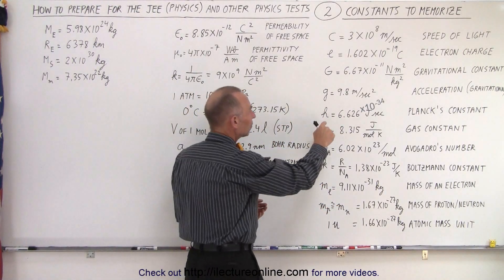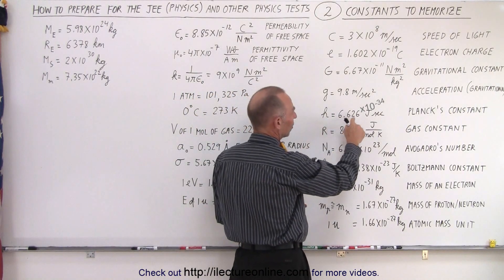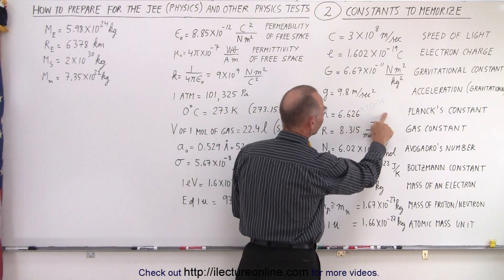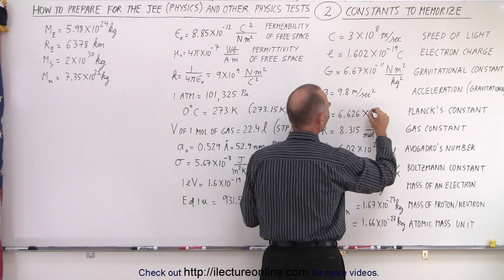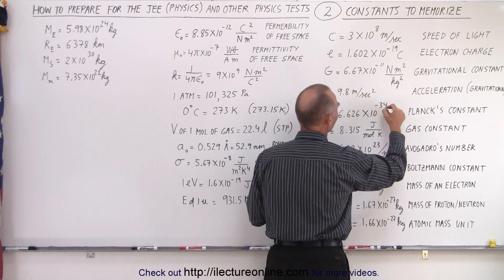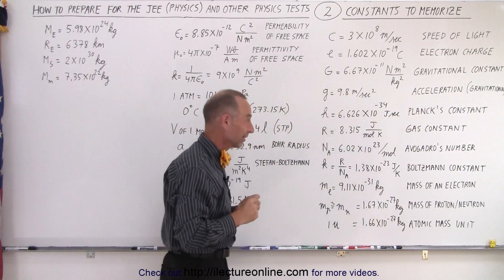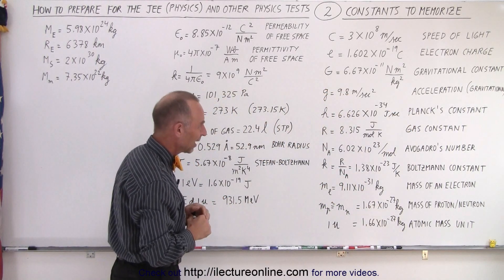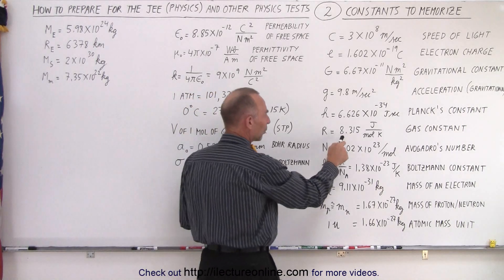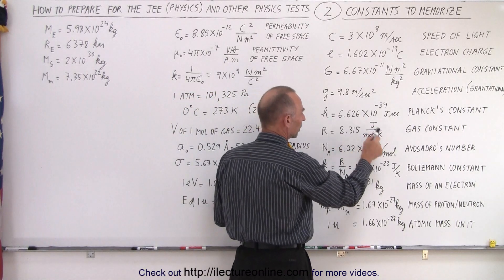We have Planck's constant, which is 6.626, ooh, I forgot something here, times 10 to the minus 34 joules times seconds. That's a lot better, otherwise that would be quite a Planck's constant, wouldn't it? Alright, the gas constant, 8.305 joules per mole per Kelvin.